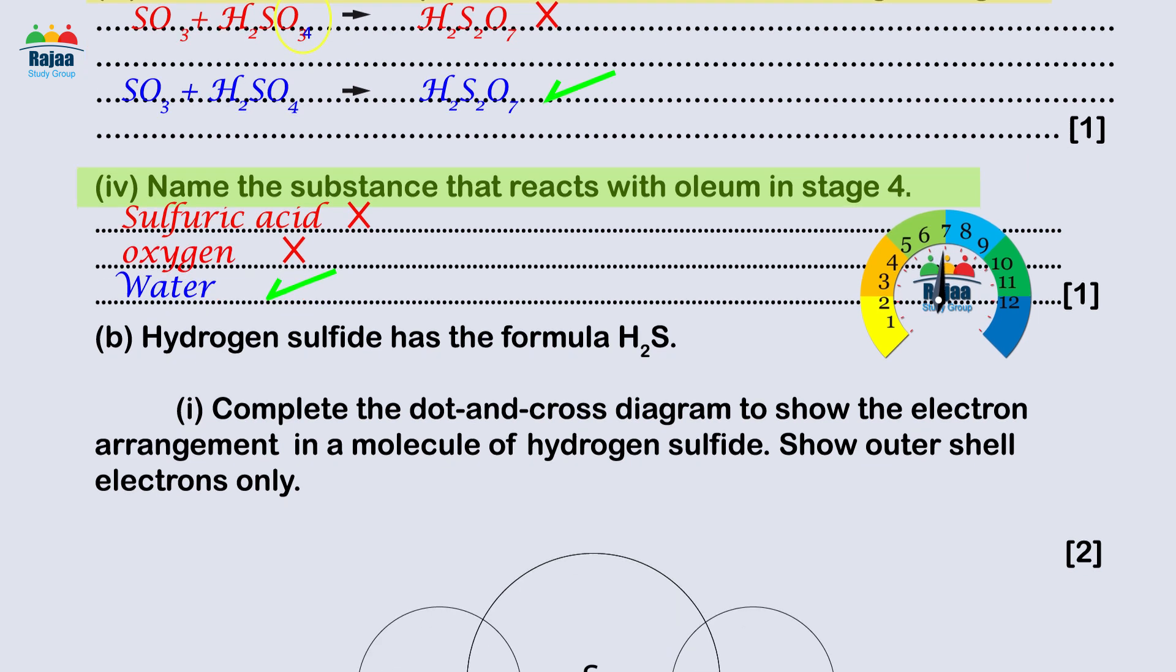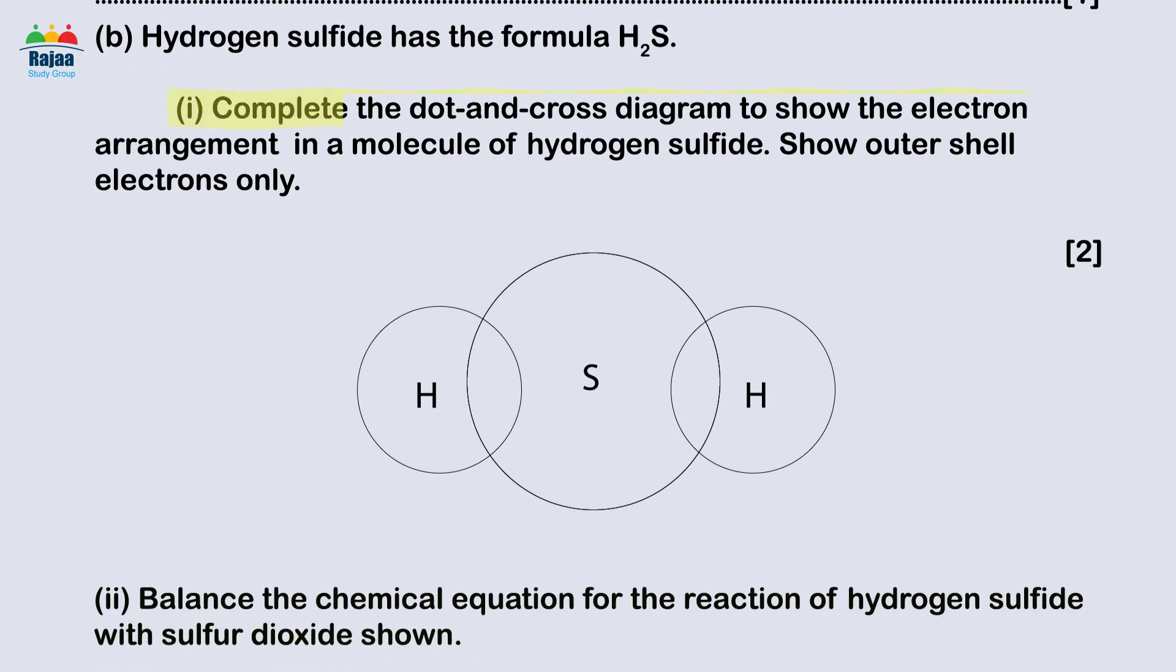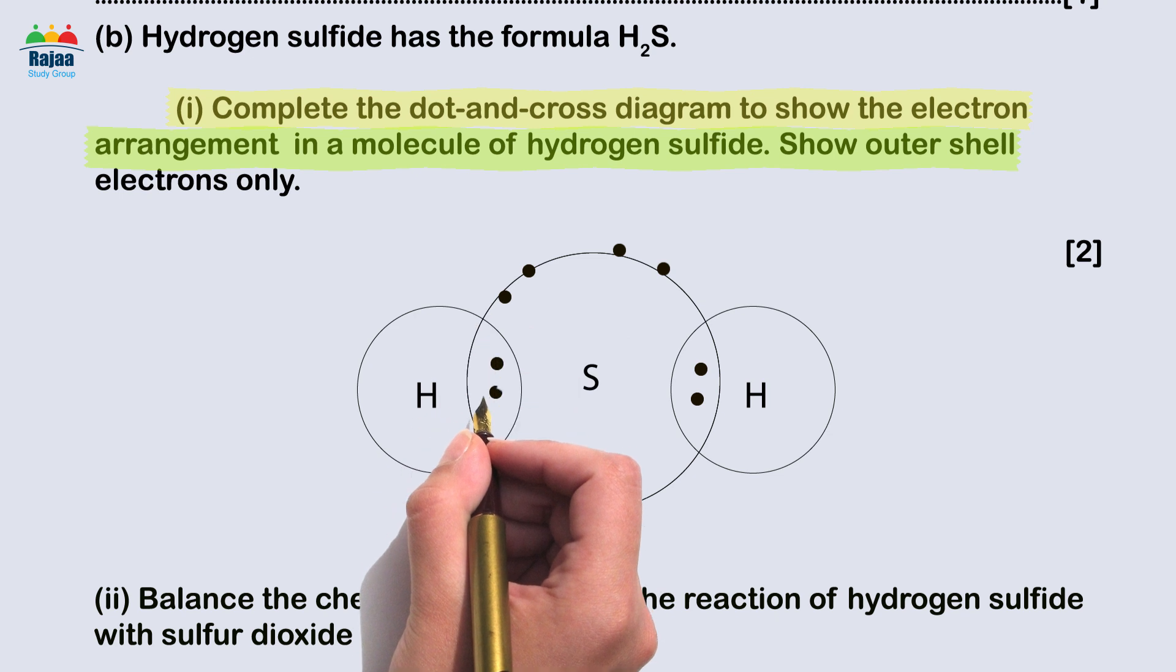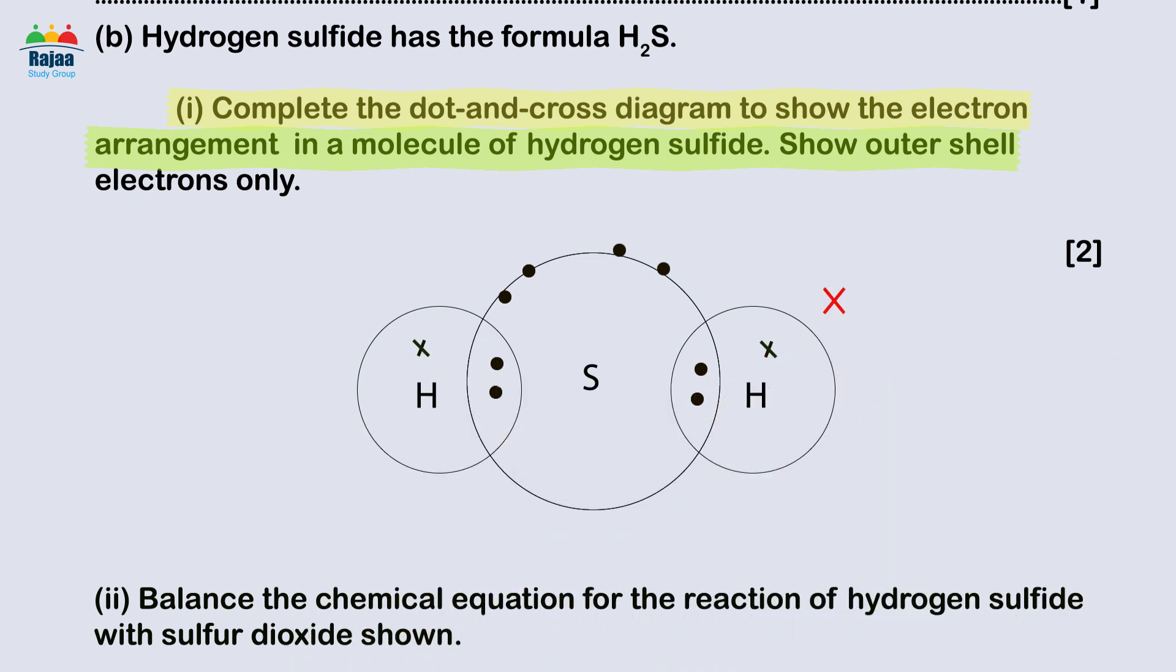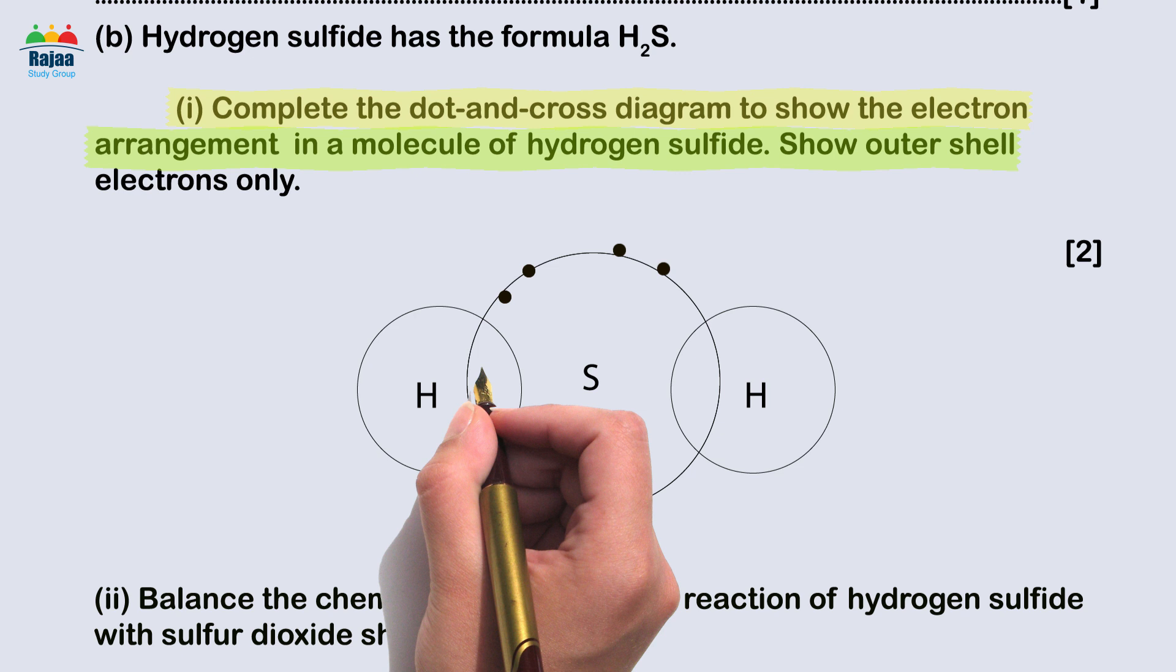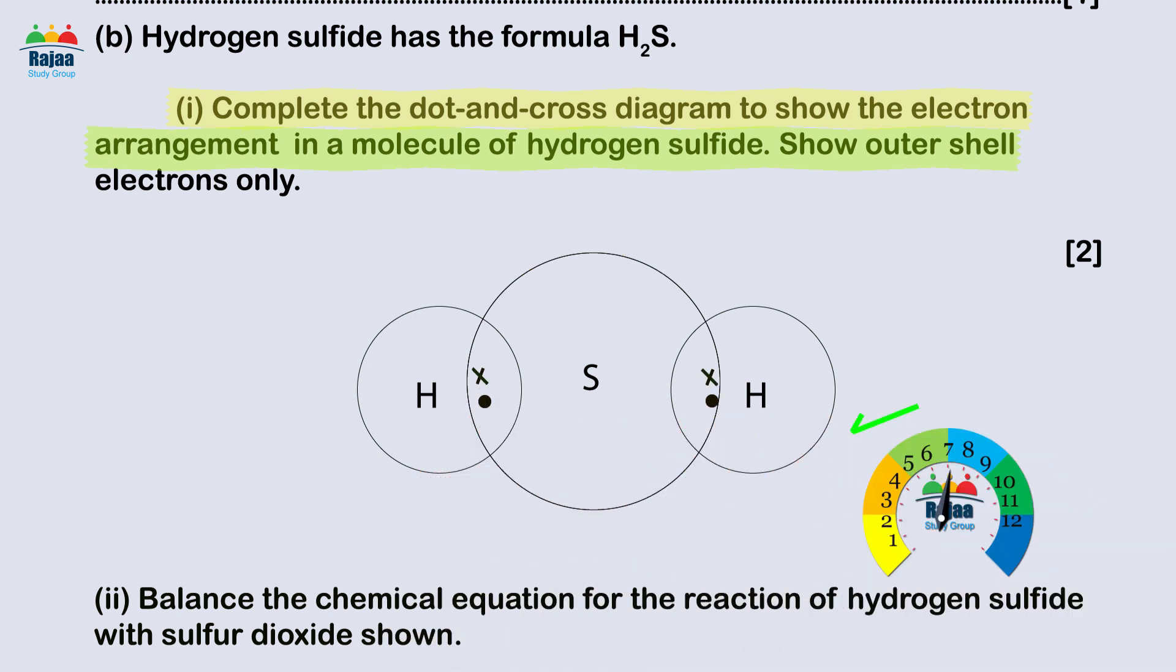How to complete the dot and cross diagram depicting the electron arrangement in a hydrogen sulfide molecule - B(i). This was answered very well. There were no common errors. A small number showed non-bonding electrons on the hydrogen atoms. Correct answer was two bonding pairs as one dot and cross each. Score: one mark. Two lone pairs on S and no additional electrons on Hs to complete the outer shell on S and both Hs - one. Score: one mark, two.